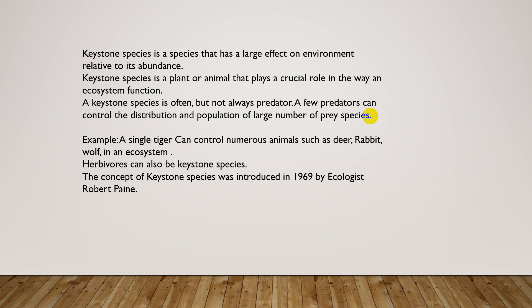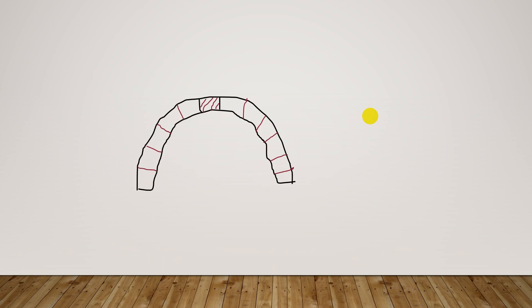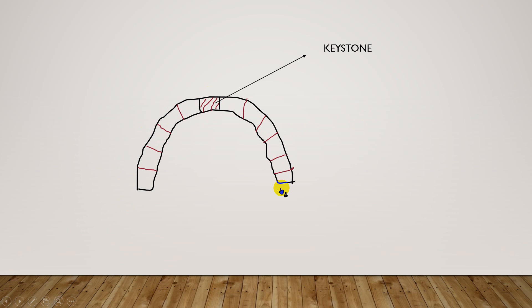Herbivores can also be keystone species. The concept of keystone species was introduced in 1969 by ecologist Robert Paine. This is understood using the analogy of an arch in civil engineering — if the keystone of an arch collapses, the whole structure collapses. In the same sense, keystone species play a crucial role in the ecosystem, just like that keystone.